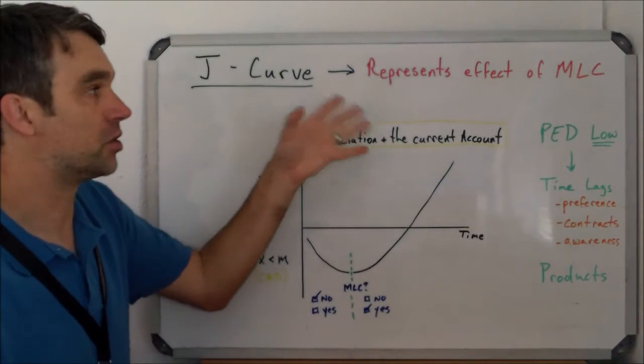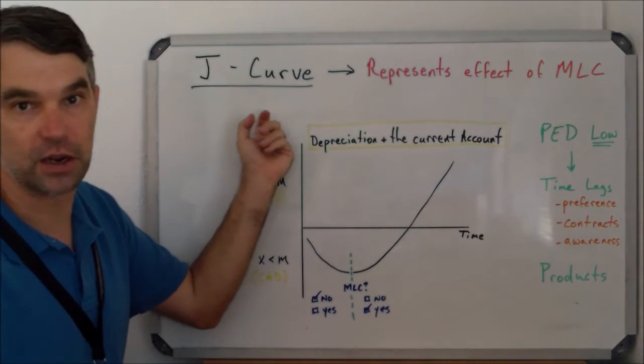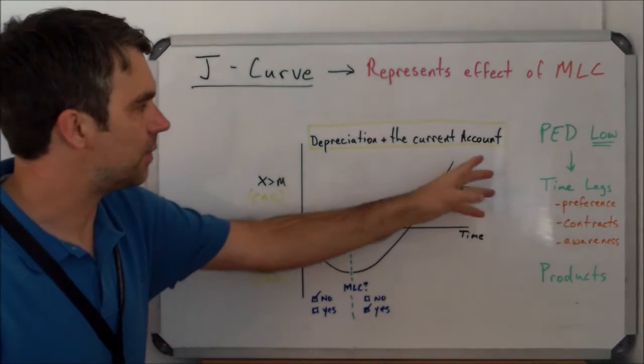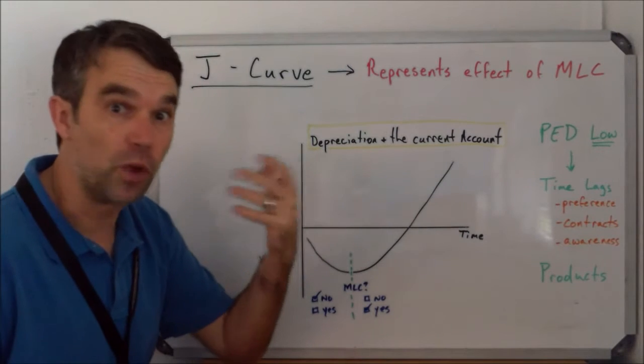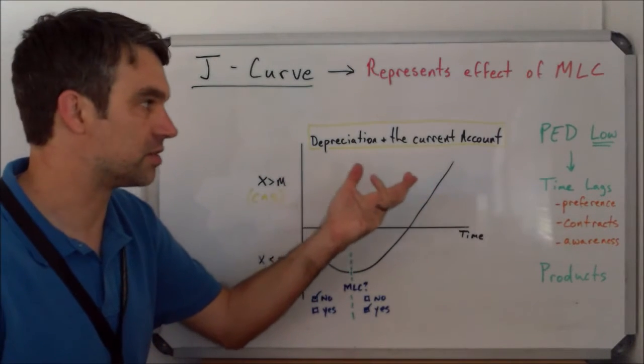A visual representation of the Marshall-Learner condition is what we call the J-curve. This is initially right after a depreciation or devaluation of a currency.